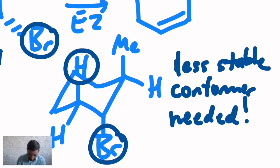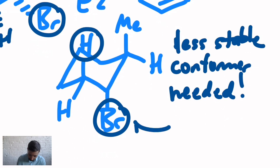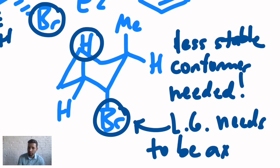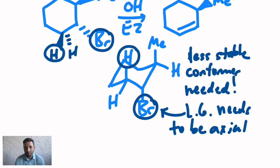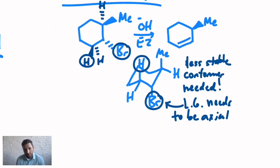So the leaving group needs to be axial. That just means I could look out for other six-membered ring questions, where maybe I have a tert-butyl somewhere in the ring, and that's forcing one of the chair conformations to really be the primary conformer. And if that ends up giving me a leaving group that's not axial, that's going to be a very tough candidate to do an E2 reaction. So those are the kinds of things to look out for with this anti-restriction.